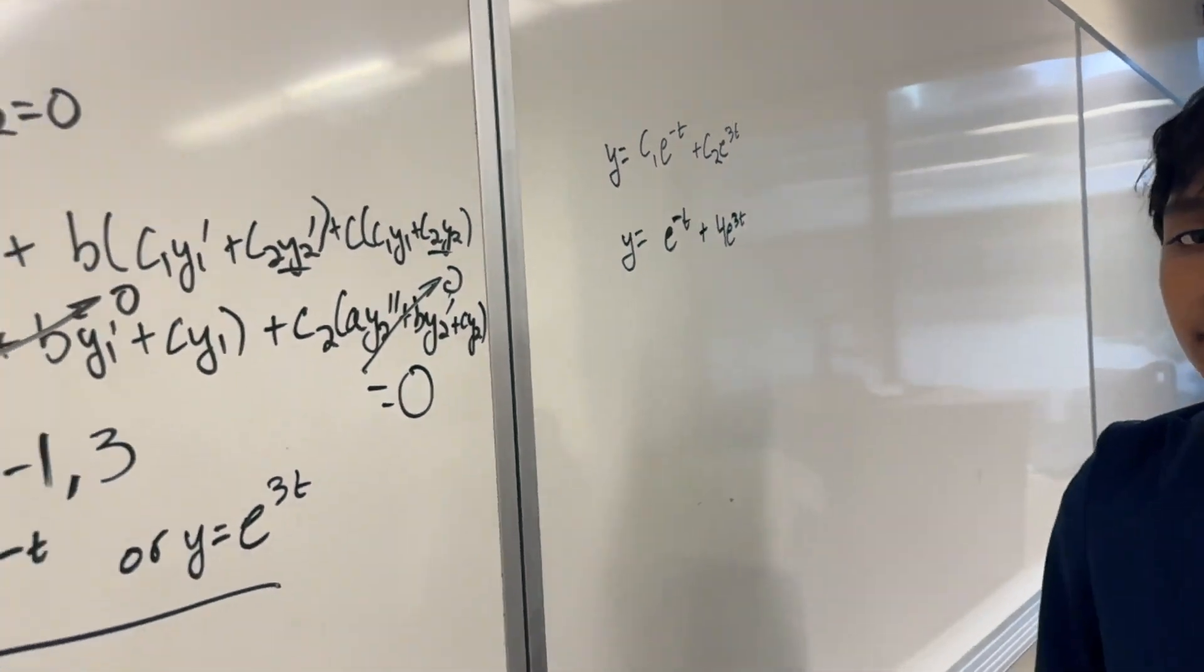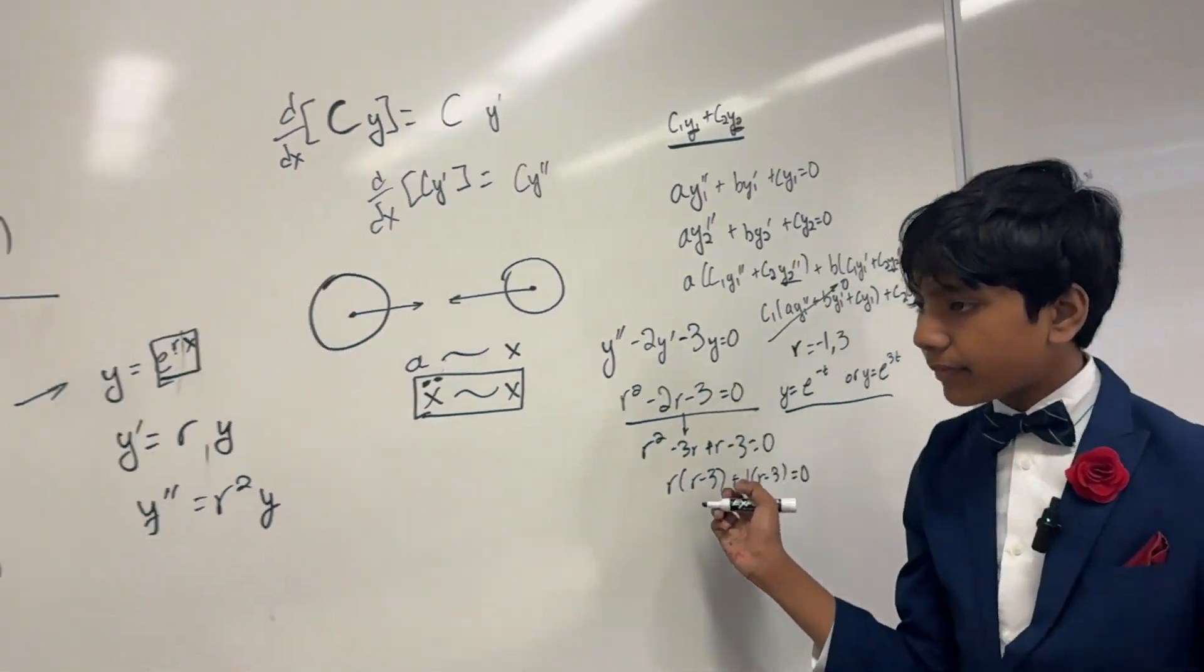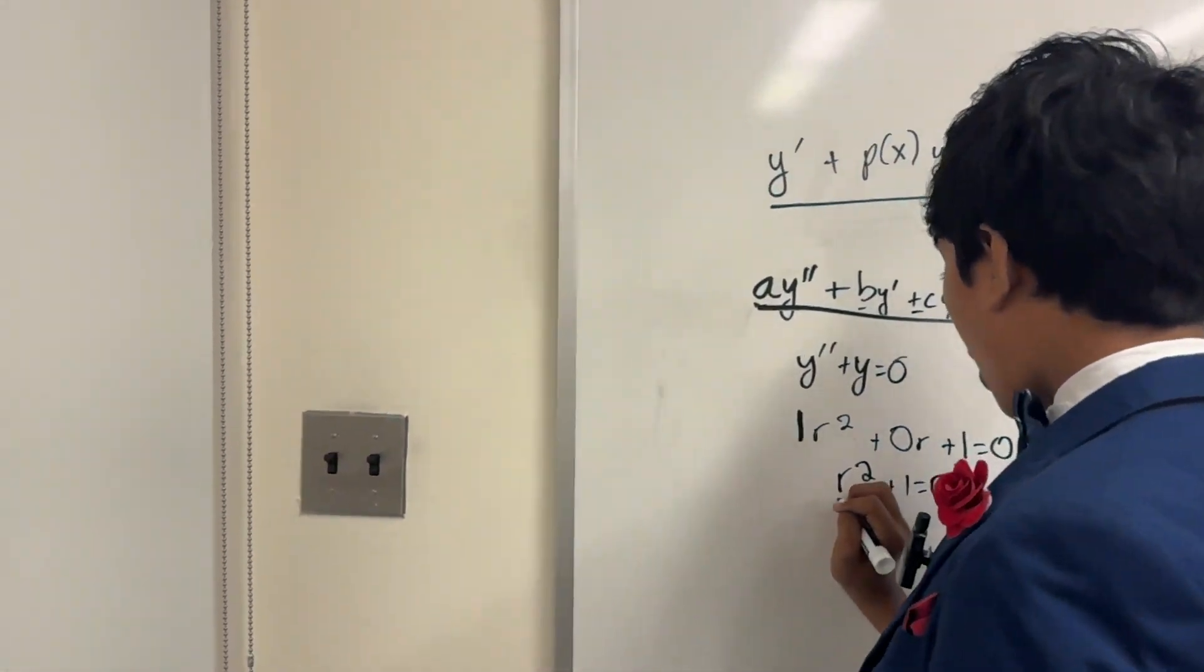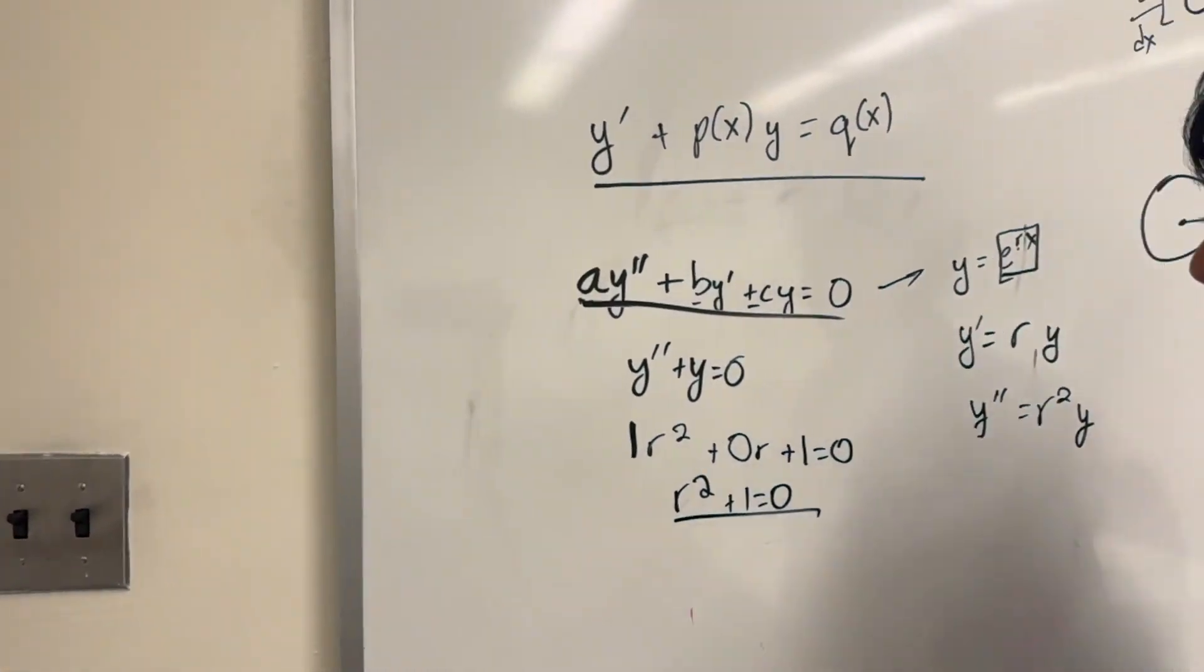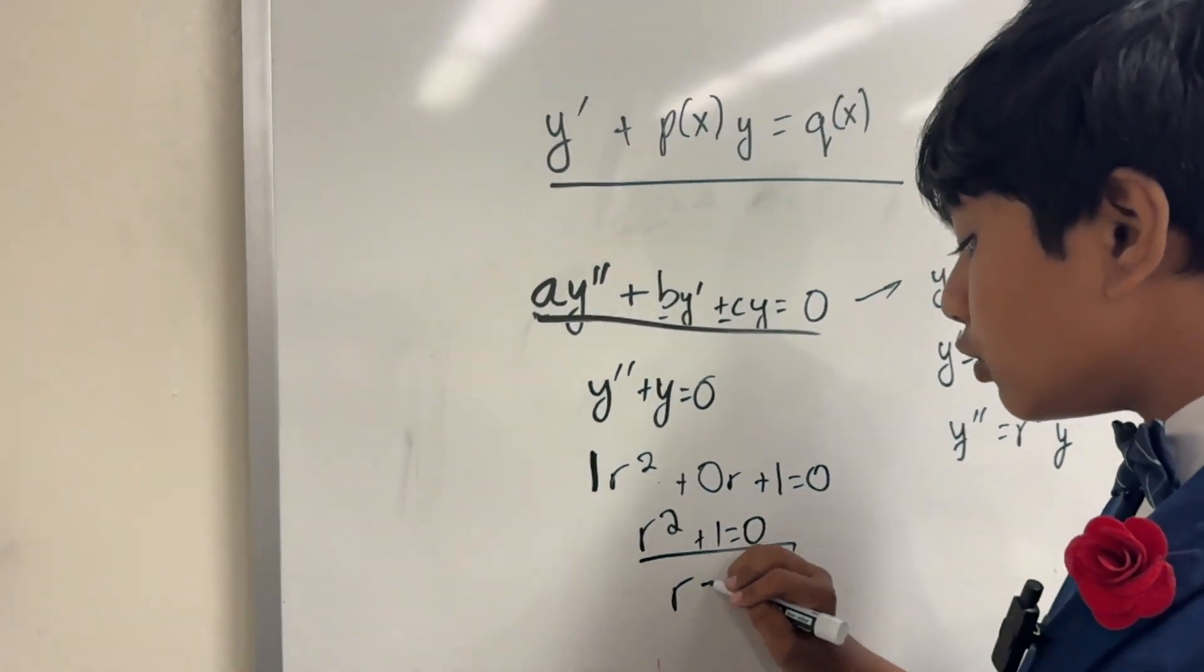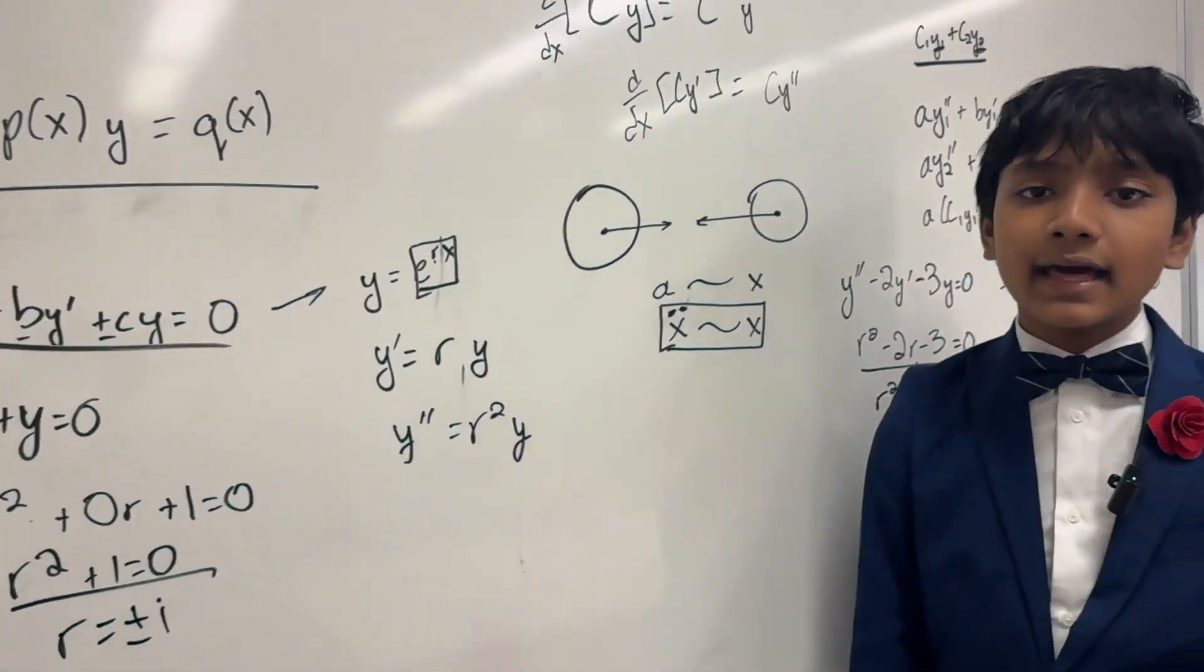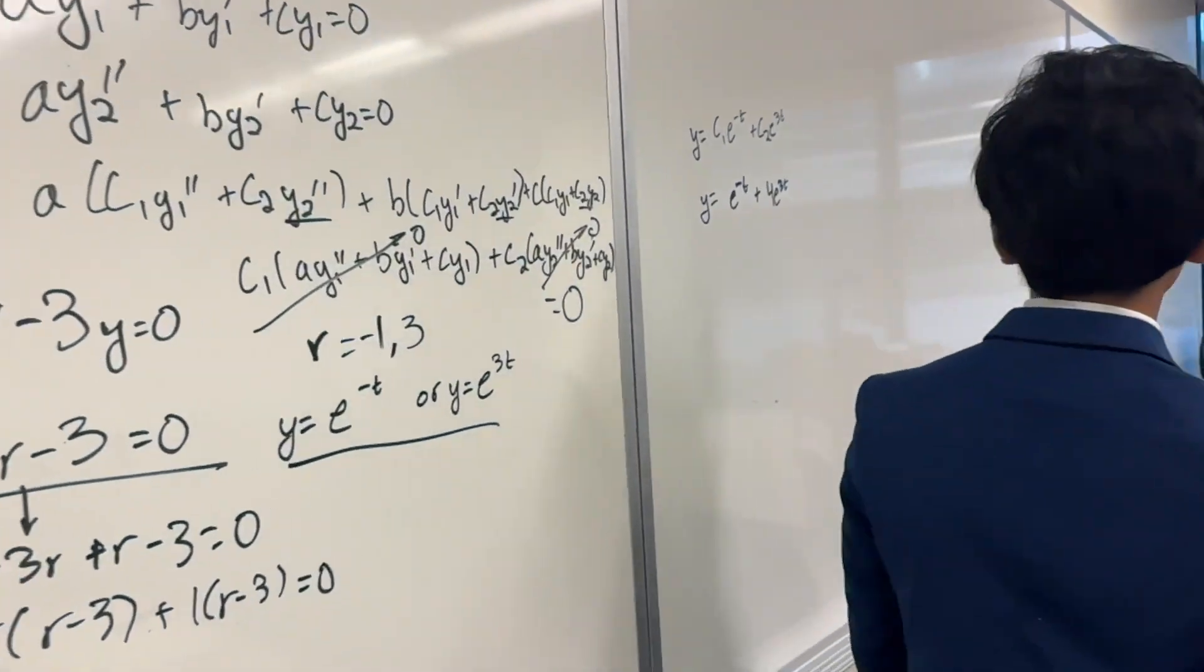For example, remember this from earlier: r squared plus 1 equals 0, nightmare for you, right? Why? Well, because you might notice that the solutions to this are actually imaginary, and that's where imaginary and complex numbers come in.